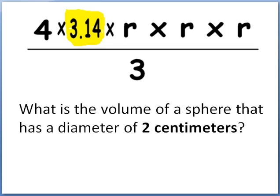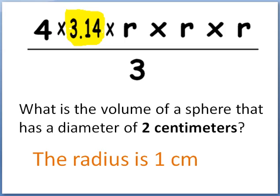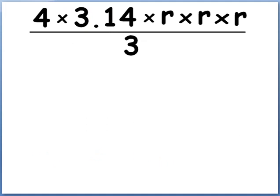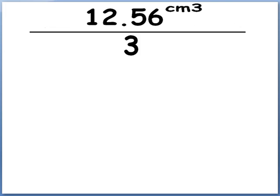So let's get back to the problem. What is the volume of a sphere that has a diameter of 2 centimeters? Well, if it's 2 centimeters, the radius is 1 centimeter, so we're going to plug in the 1 centimeter into the formula above. So we take the formula and we plug in 1 centimeter. Now it's just straightforward multiplication.